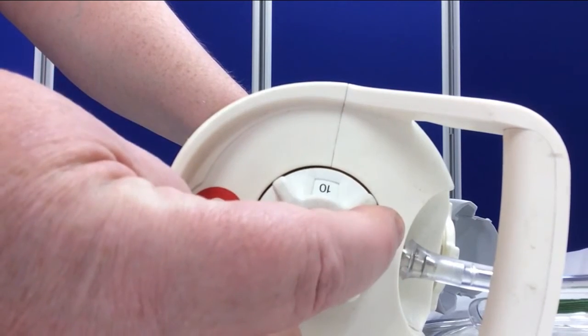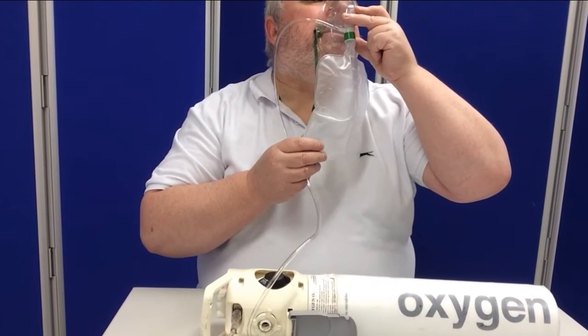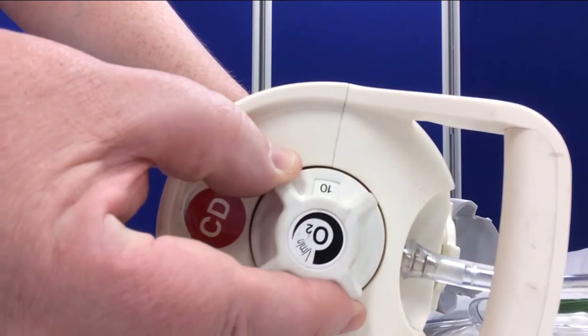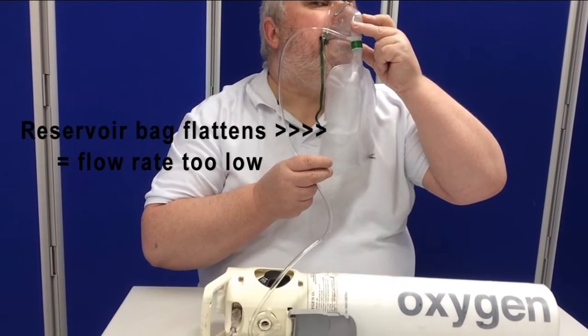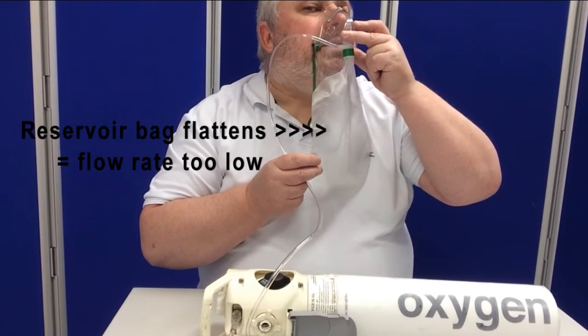As you can see, once it reached 8 litres per minute the bag completely deflated and I was just breathing what air was left in the mask. So the lowest level that was suitable for me was in fact 10 litres.